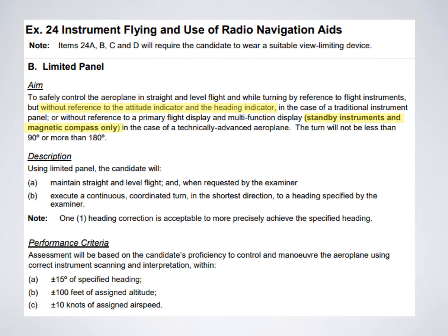The examiner is going to ask you to hold straight and level and execute a turn. The turn will not be less than 90 degrees or more than 180 degrees — so you can plan for that range. You will be expected to maintain straight and level flight and, when requested, execute a timed turn. The performance criteria are: plus or minus 15 degrees of heading on rollout, within 100 feet of altitude, and within plus or minus 10 knots of airspeed.